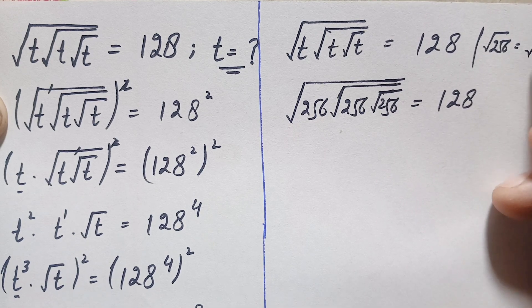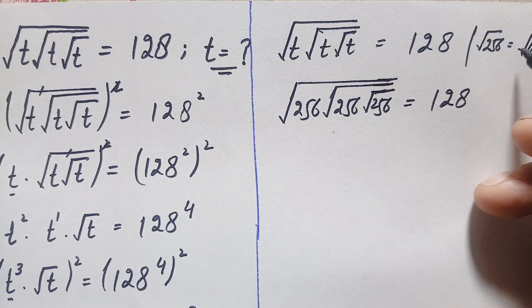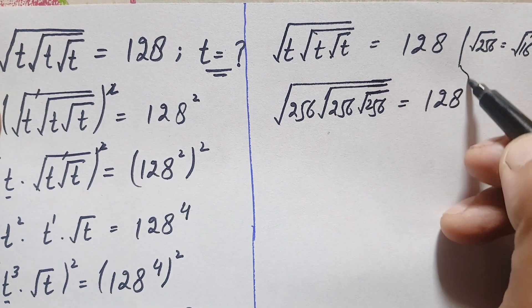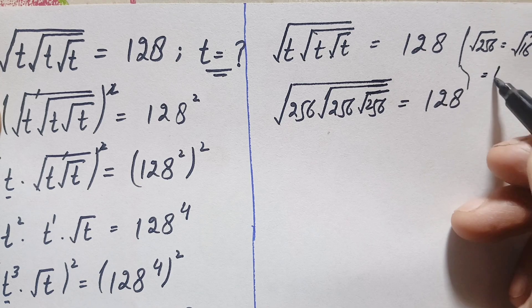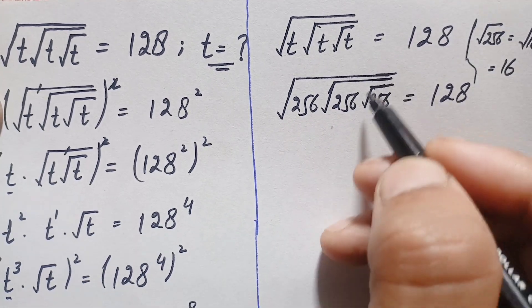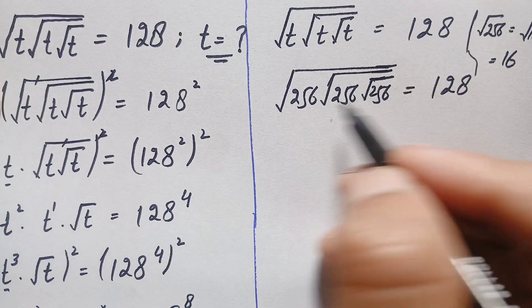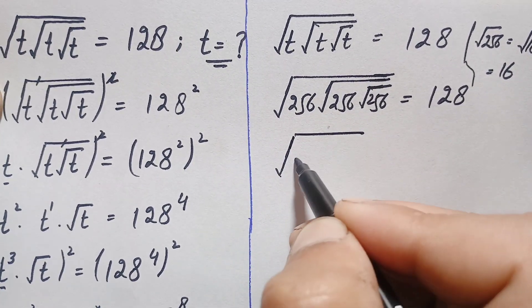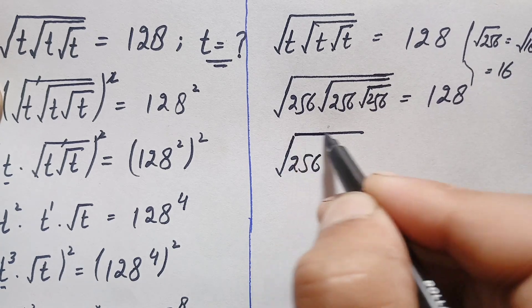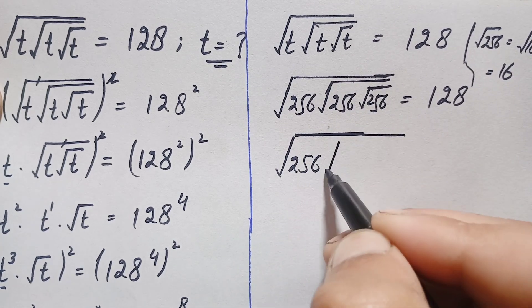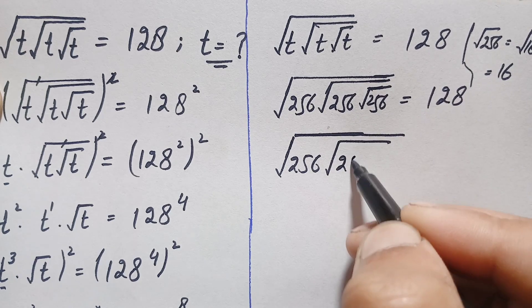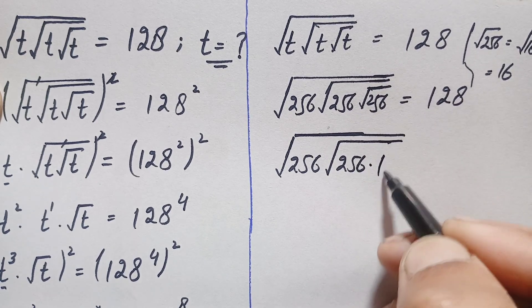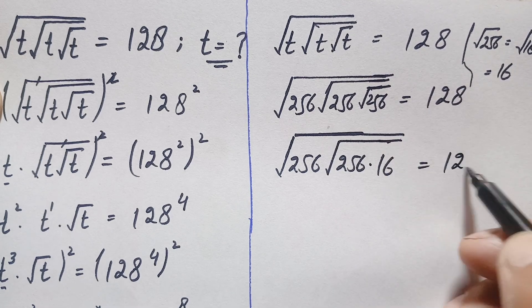Substituting t equals 256, the left-hand side becomes the square root of 256, times the square root of 256, times the square root of 256. Now 256 is 16 squared, so the square root of 256 equals 16. We replace each square root of 256 with 16.